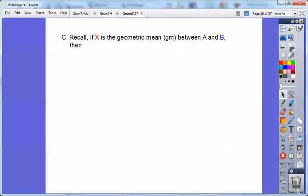So recall, I've got to remind you guys what geometric mean means, and I'm going to abbreviate GM for geometric mean. If X is a geometric mean between A and B, then you get this proportion. You put X in the bottom left and X in the top right, and A and B go in the other two spots, and then you just cross multiply.